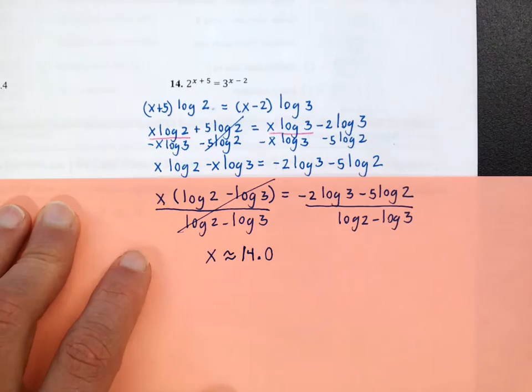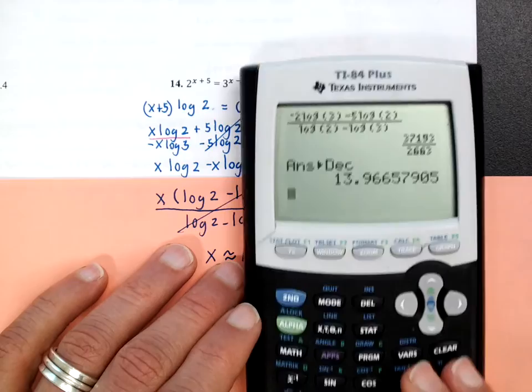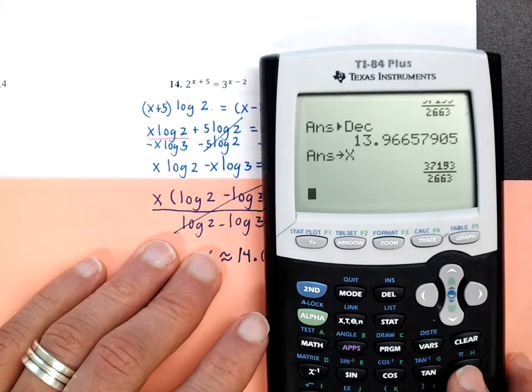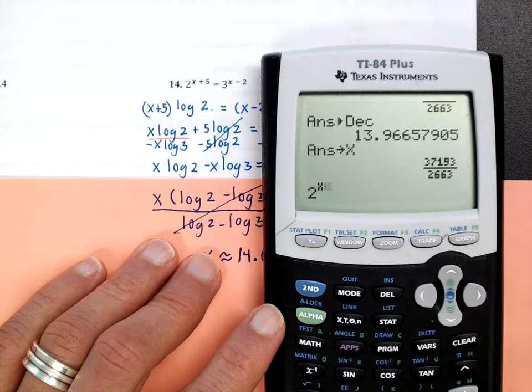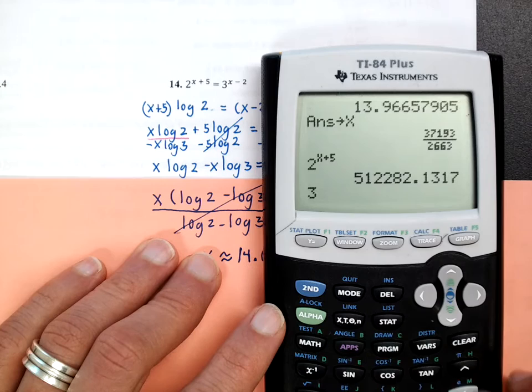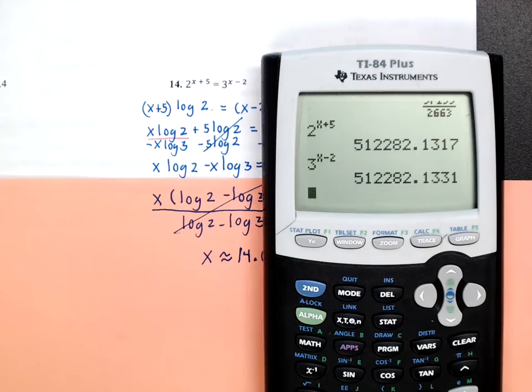There's a way to check this. Press the STO key, store that value as x, and then evaluate both sides of the original equation. Because of the way the calculator rounds, you may get a slightly different answer, but notice the two sides come out almost the same — confirming our solution is correct.